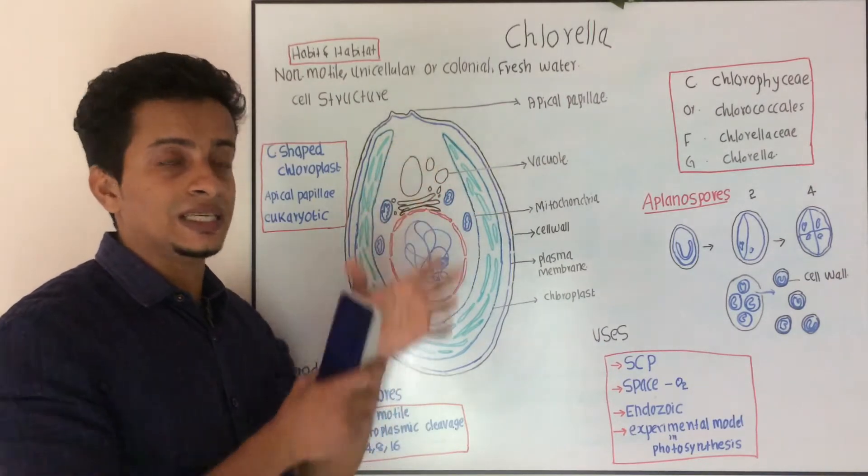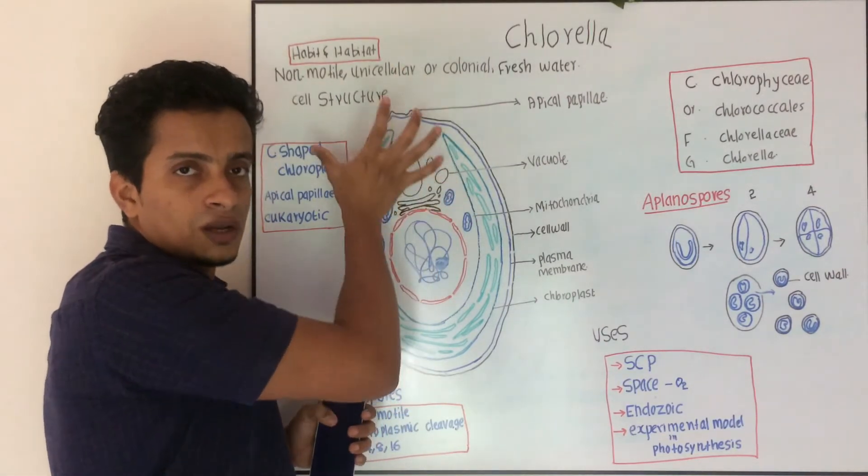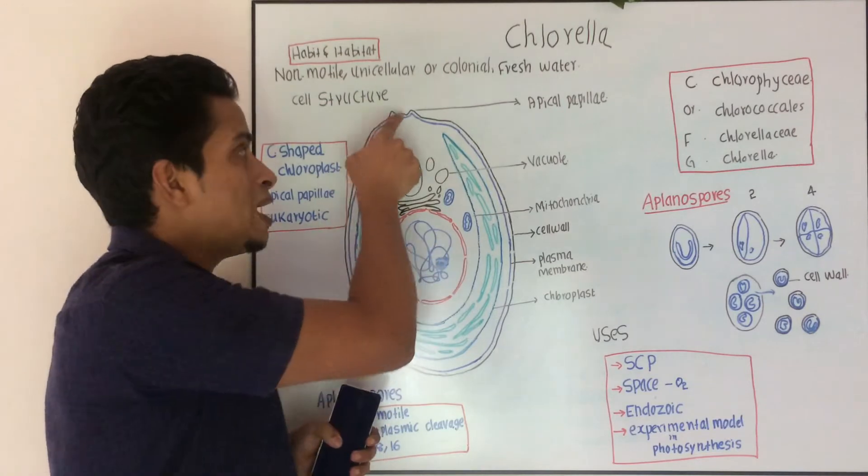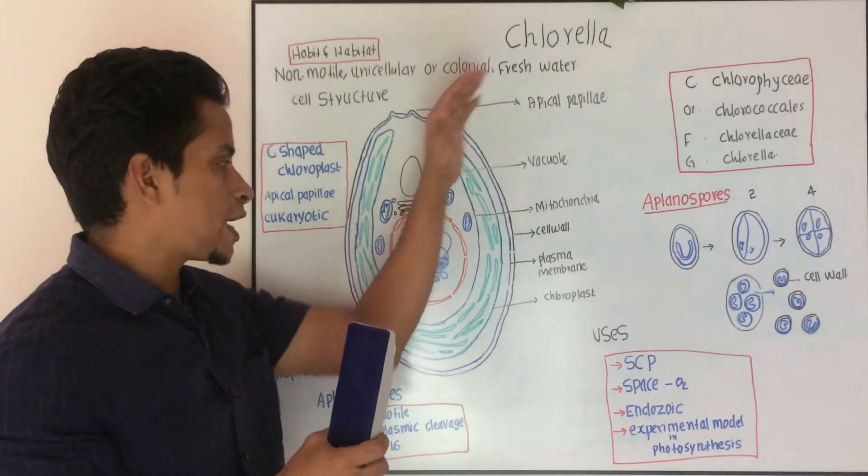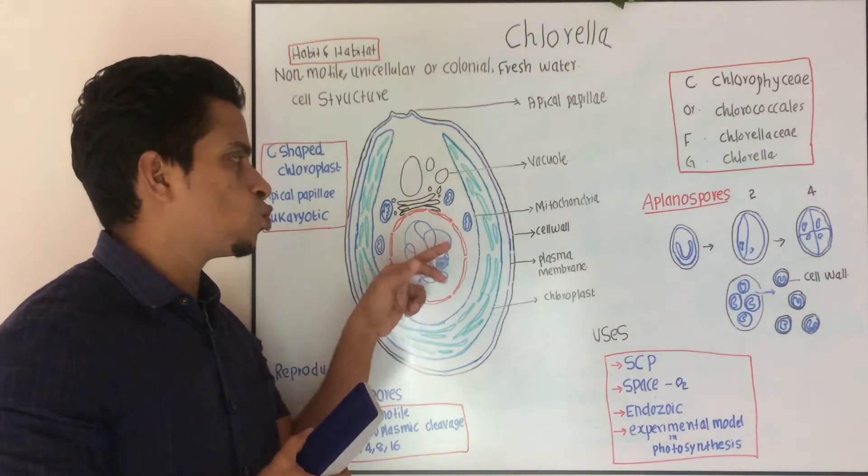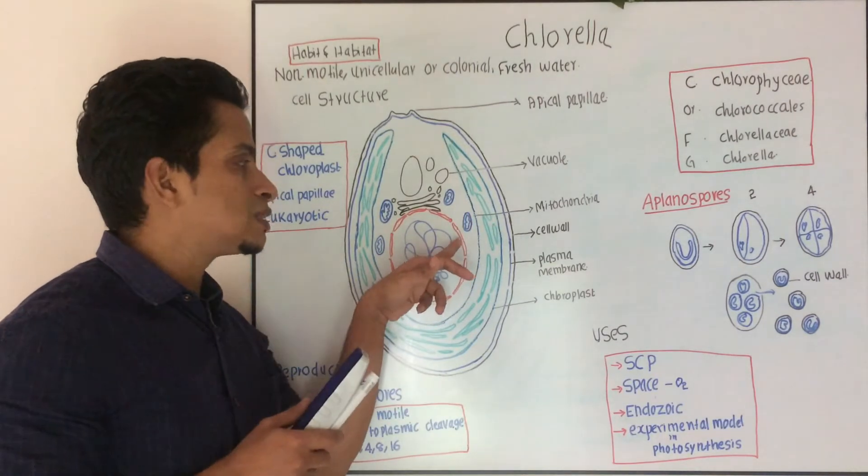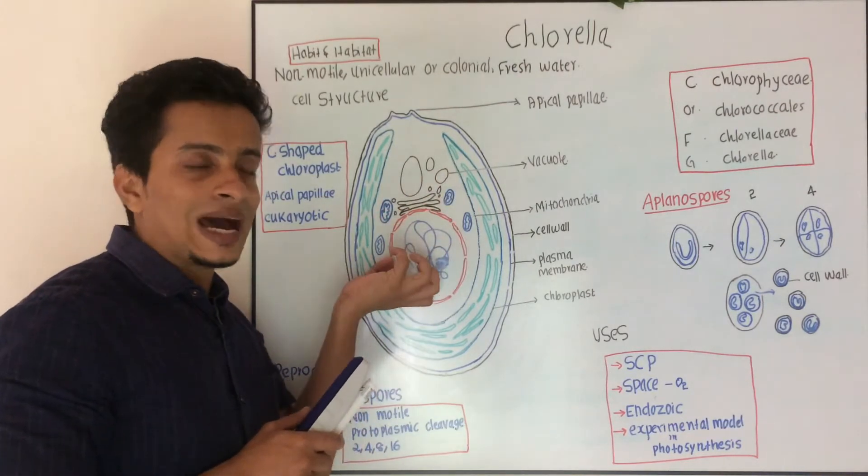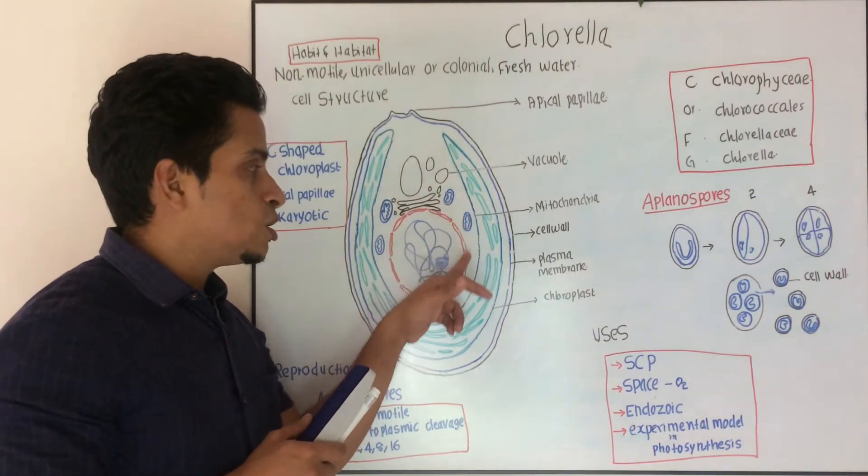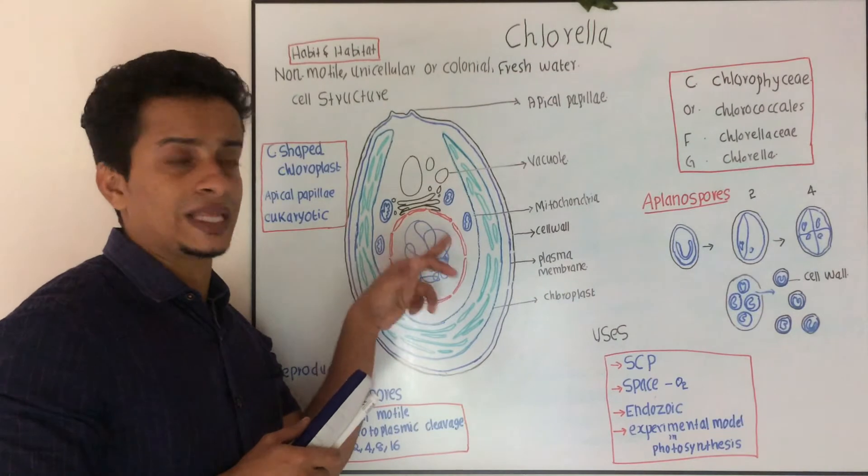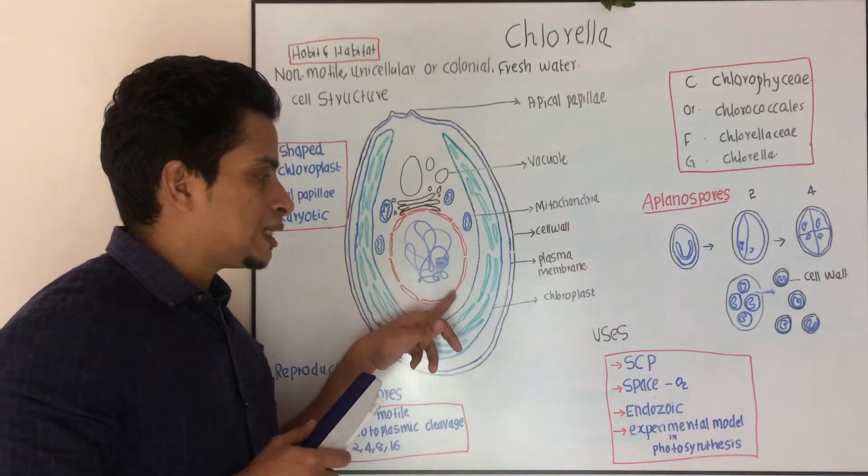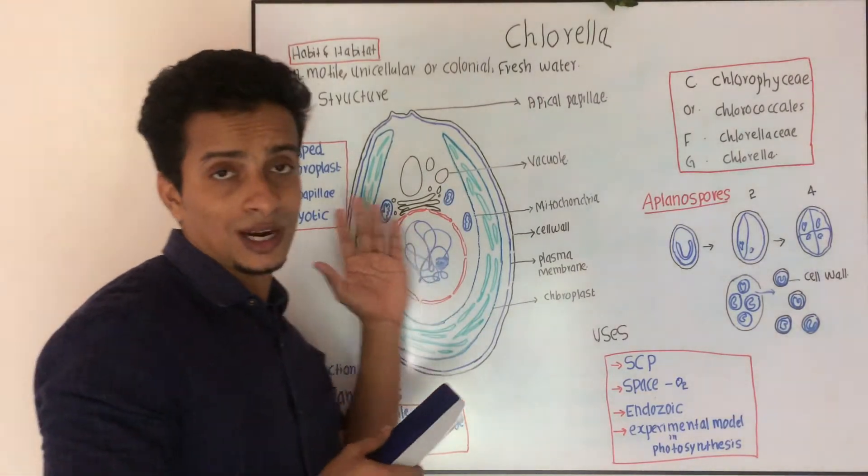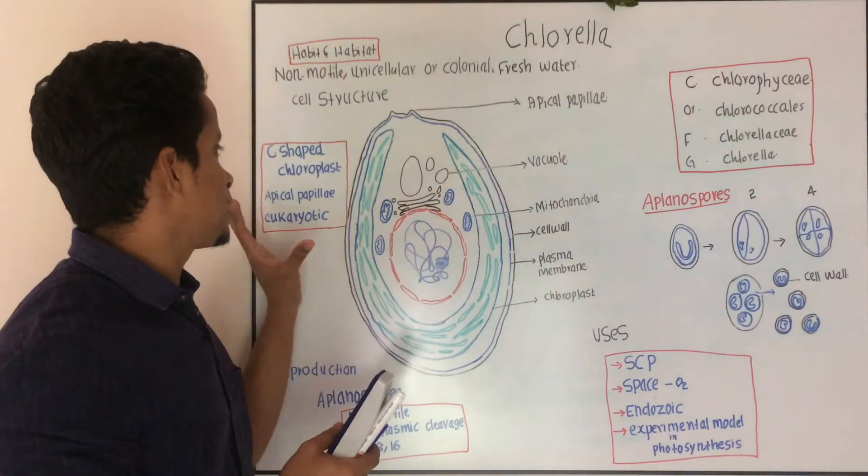Then you can see an extension of cell wall and plasma membrane at the apical region of this unicellular form, and is known as apical papillae. Why it is eukaryotic? Because a membrane is there to separate nuclear content from cytoplasmic content. That means true nucleus is eukaryotic. Inside you can see genetic material, nucleolus.